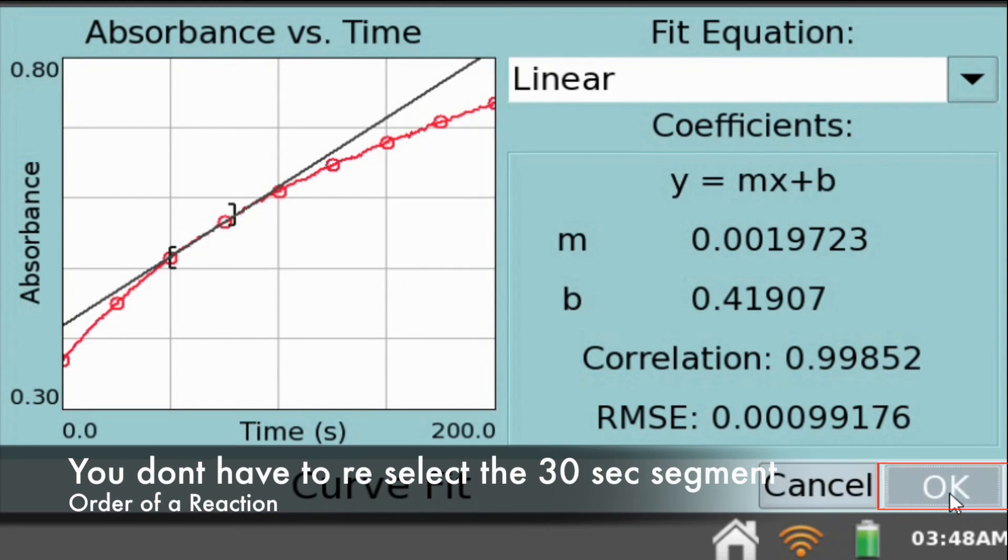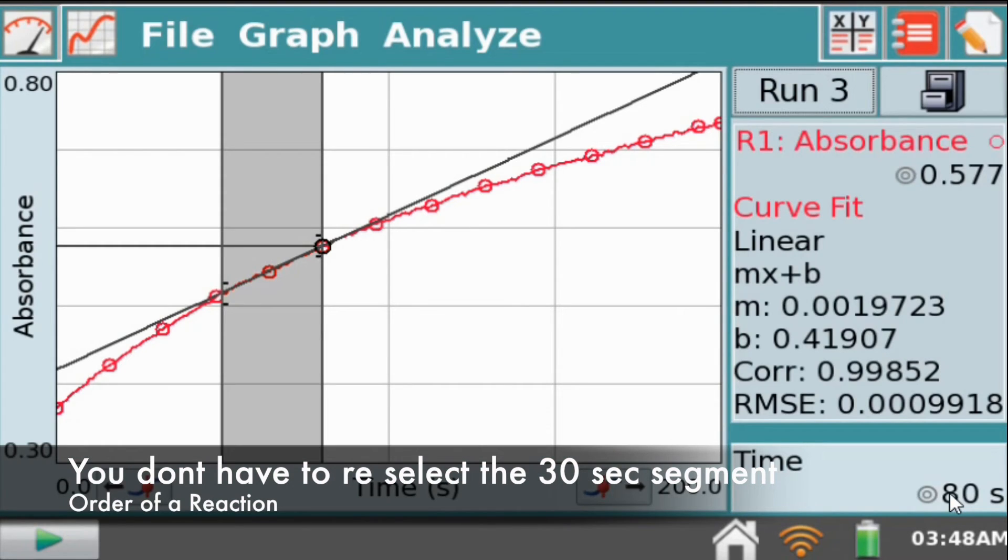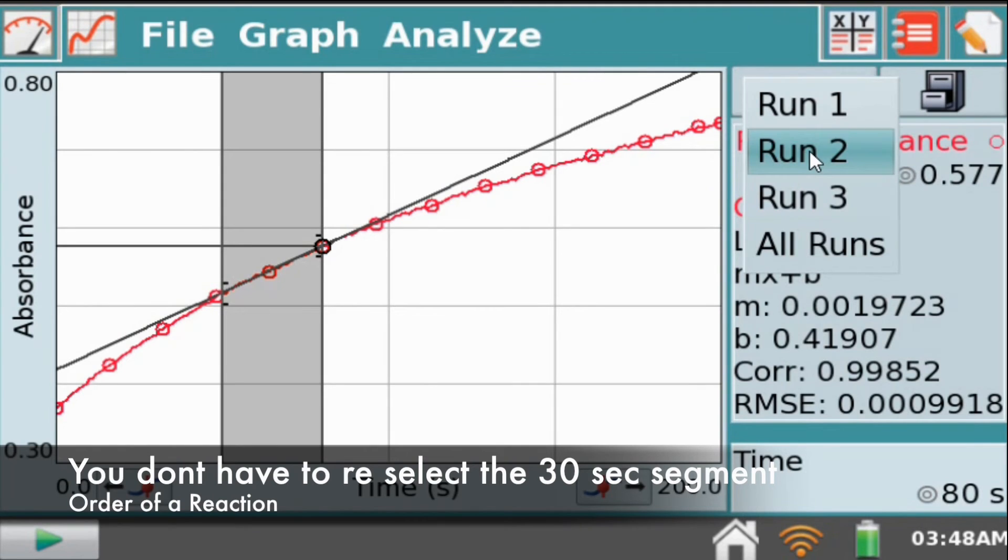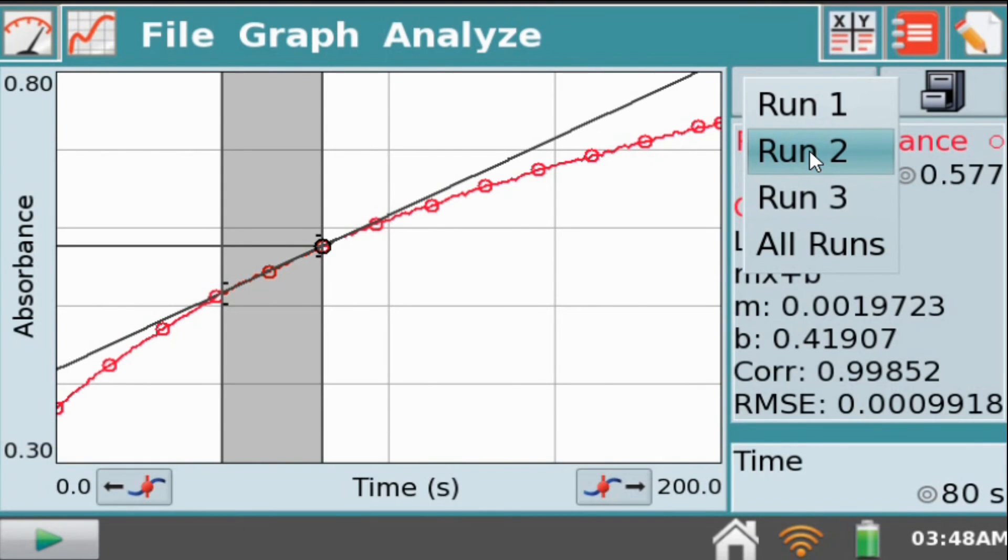Now select OK. Next, select run 2 and repeat the steps. Do the same for run 1.